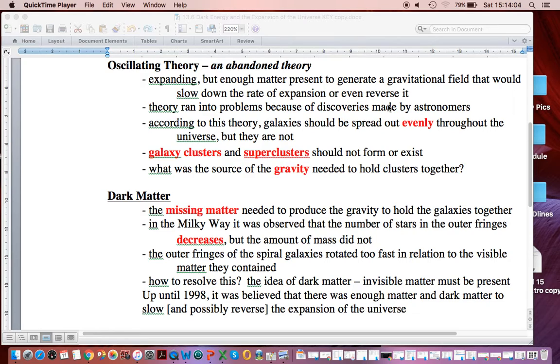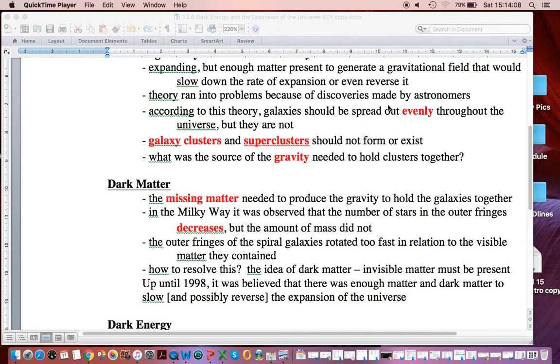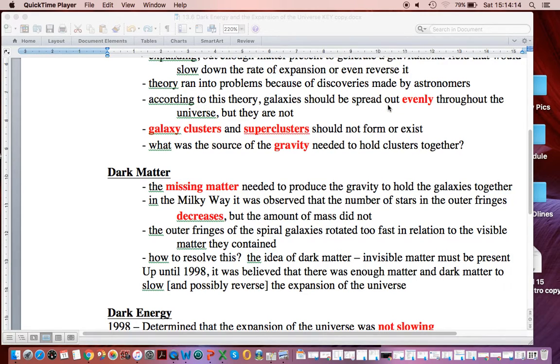Also, the outer fringes of the spiral galaxies rotate too fast. And again, so the explanation is there must be dark matter present. Now up until 1998, it was believed that there was enough visible matter and dark matter present to slow down this rate of expansion of the universe.